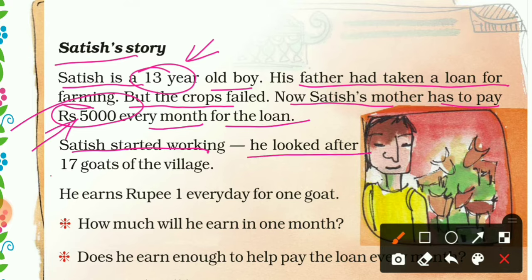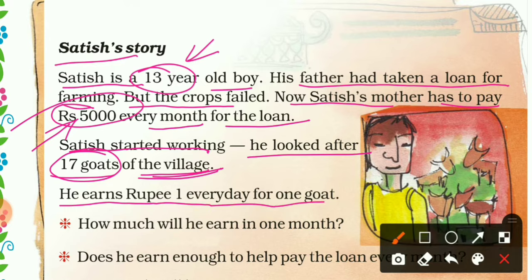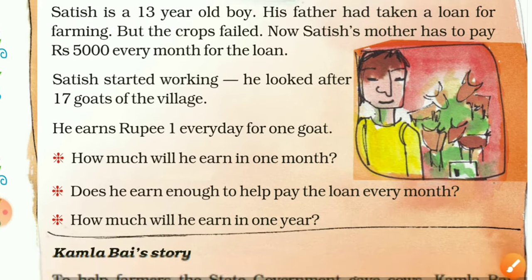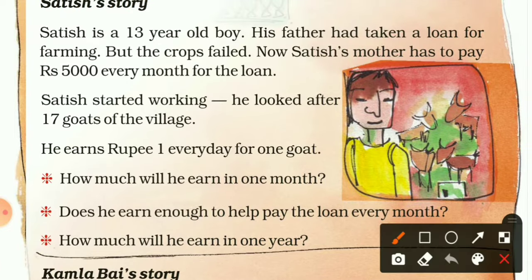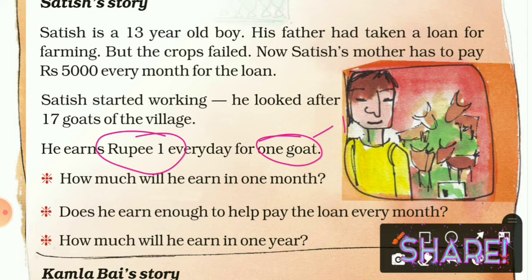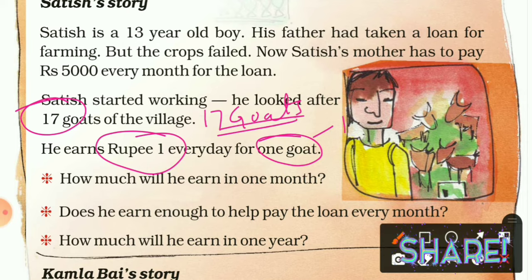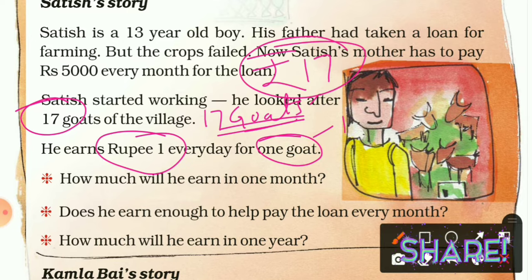Satish looks after seventeen goats of the village. He earns one rupee every day for one goat. So in total he has seventeen goats, meaning in one day he will get seventeen rupees.